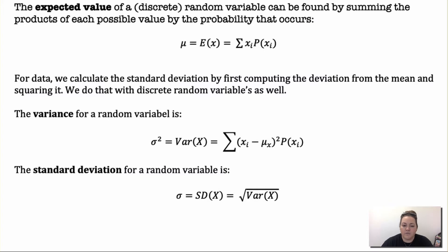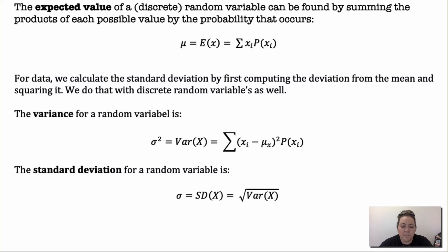The expected value of a discrete random variable can be found by summing the products of each possible value multiplied by the probability that it occurs — each outcome times its probability, plus the next value times its probability, and so on. This gives you the expected value, which is also the mean. For data, we calculate the standard deviation by first computing the deviation from the mean and squaring it — we do that with discrete random variables as well.